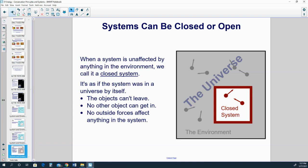When a system is unaffected by anything in the environment, we call it a closed system. It's as if the system was in a universe by itself. The objects can't leave, no other object can get in, and no outside forces affect anything in the system.